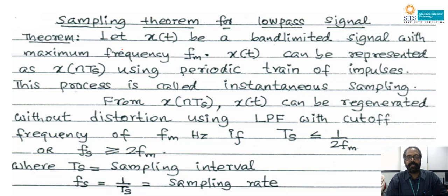I am Biju Balakrishnan working with SIS GST, and the topic I am going to explain is the sampling theorem for low pass signals. Basically, in many applications the information signal is in the form of analog signals, like the output of a microphone or output of a video camera. Nowadays we want to convert those analog signals to digital signals, because many digital processing applications are possible and better quality can be achieved using digital compression and processing techniques.